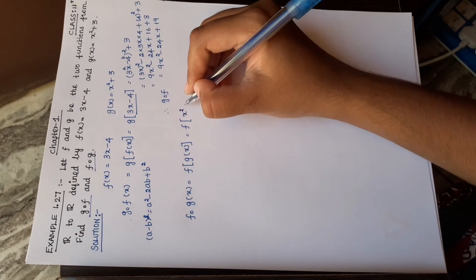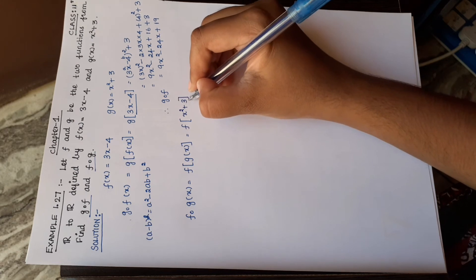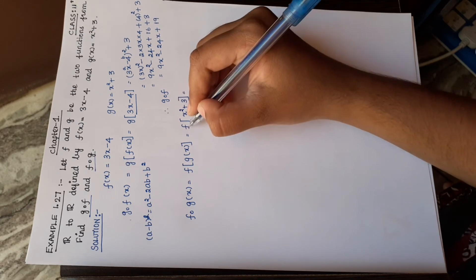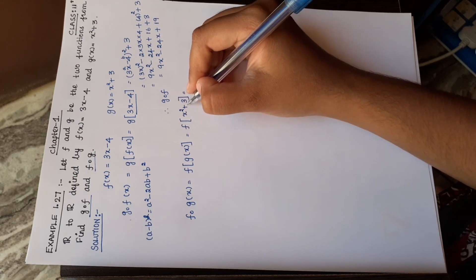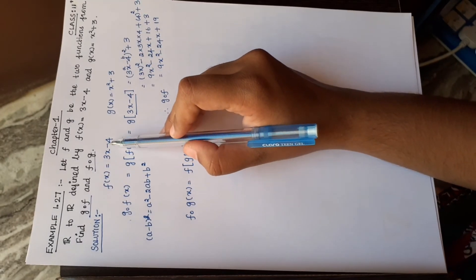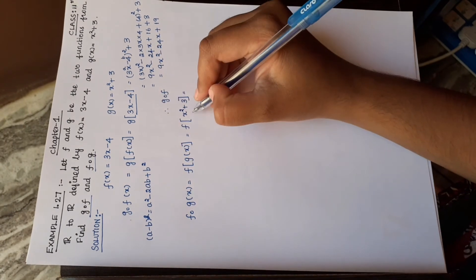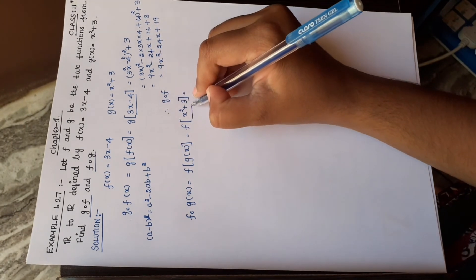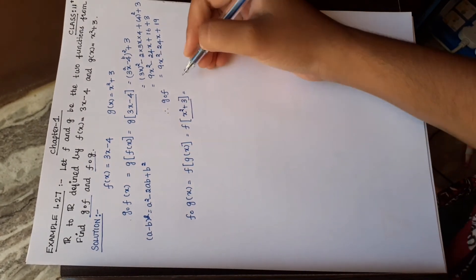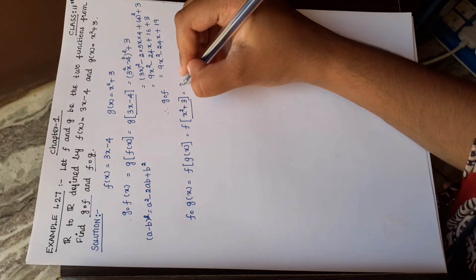Now find f of g. So f(g(x)) means substituting g(x) = x² + 3 into f. So f(g(x)) = 3(x² + 3), replacing x with x² + 3.